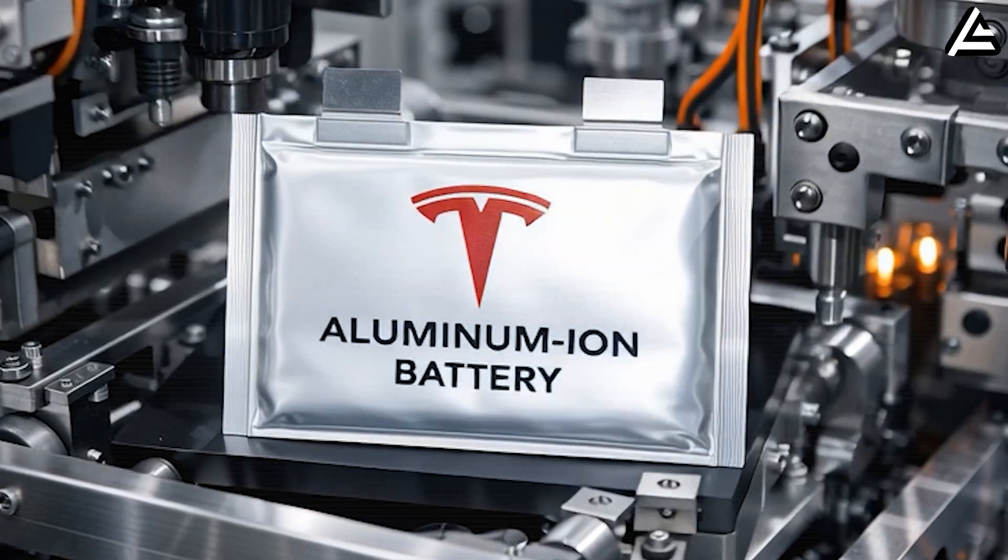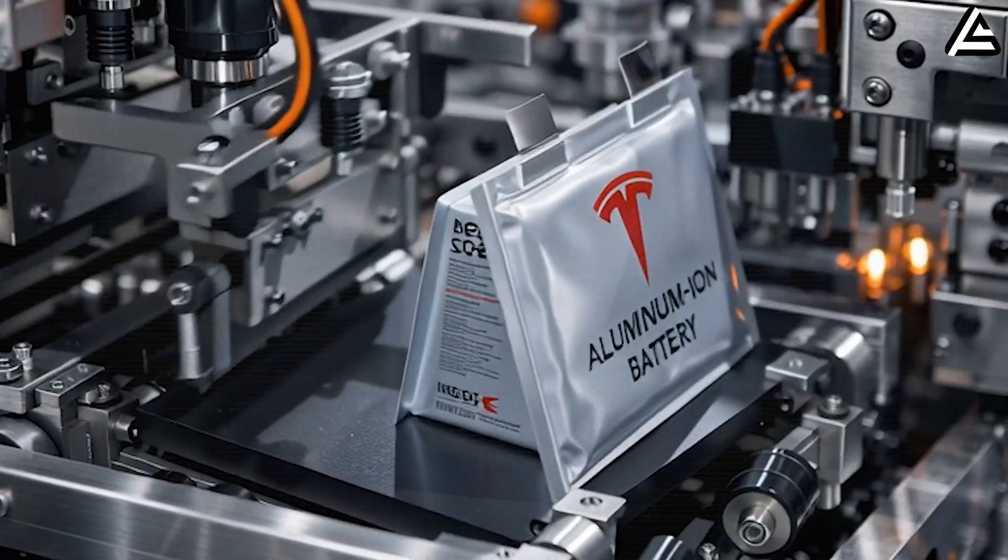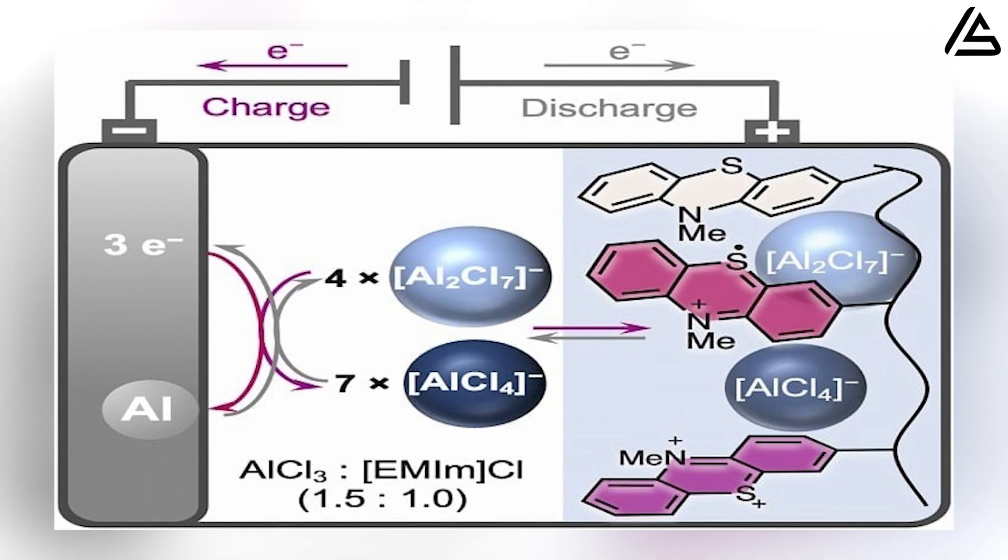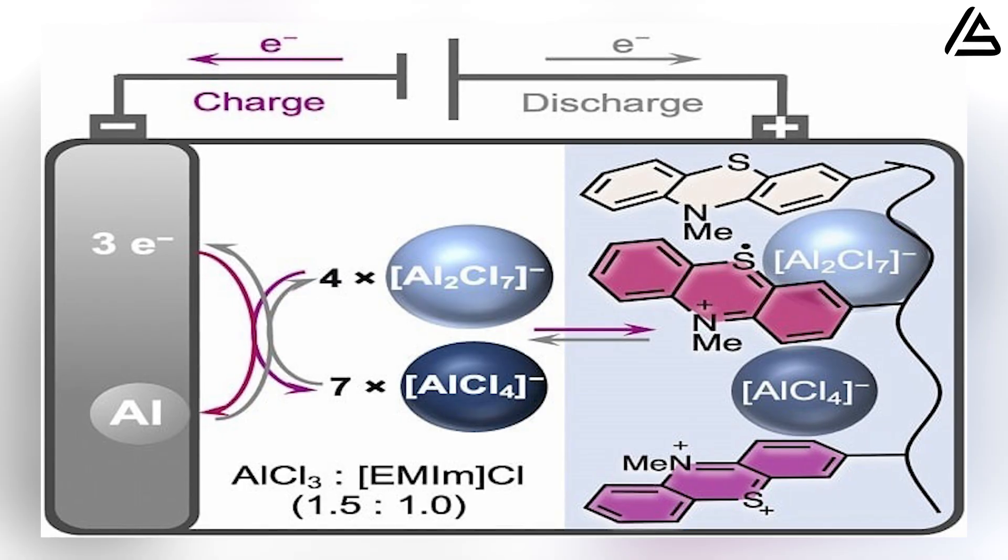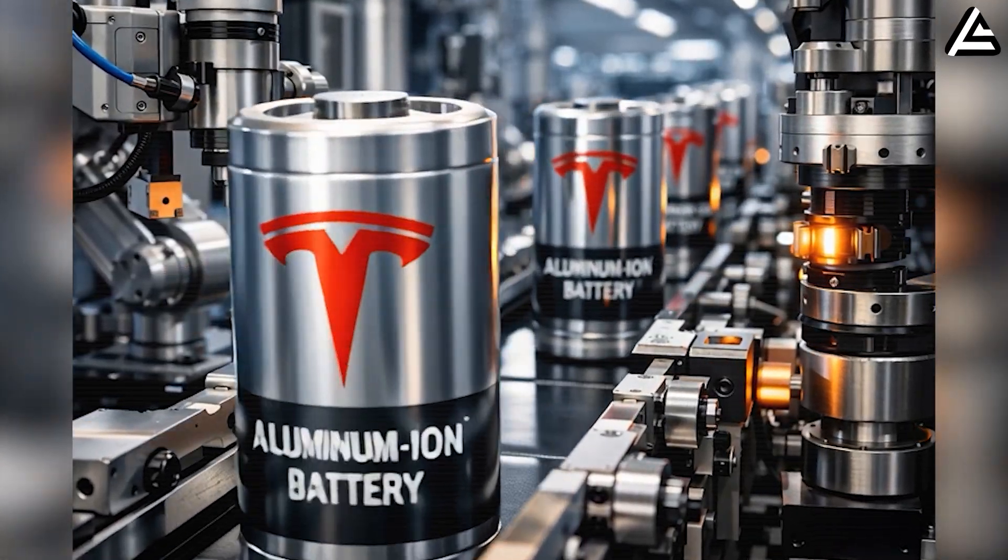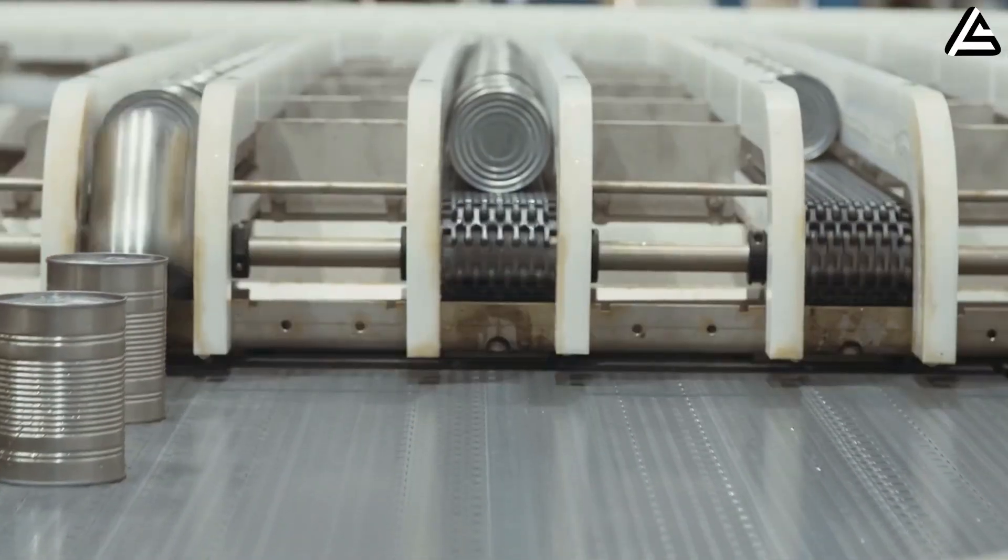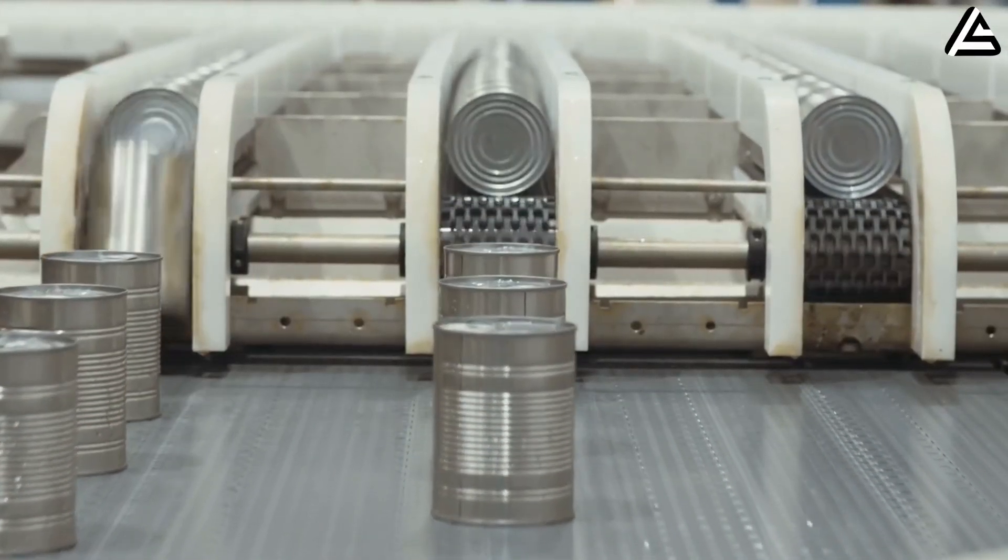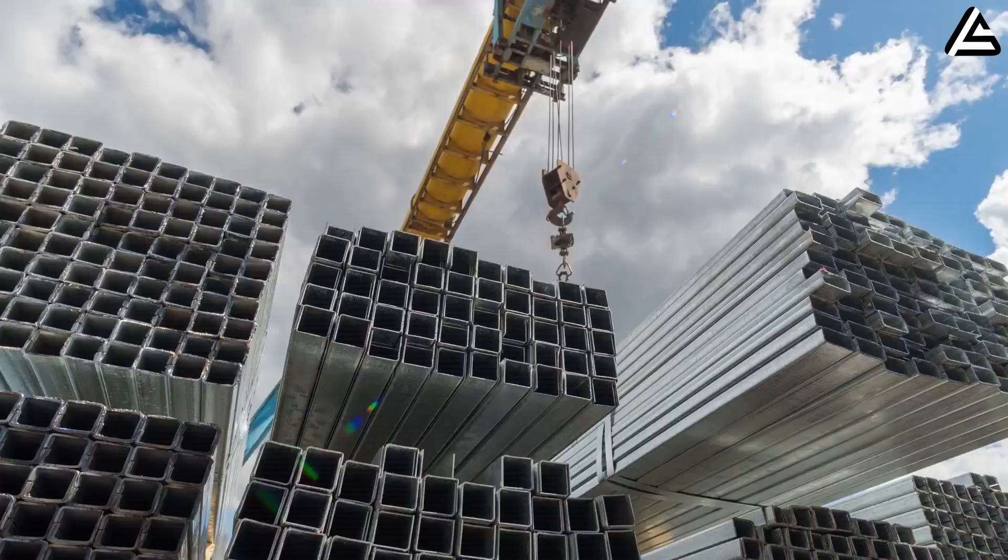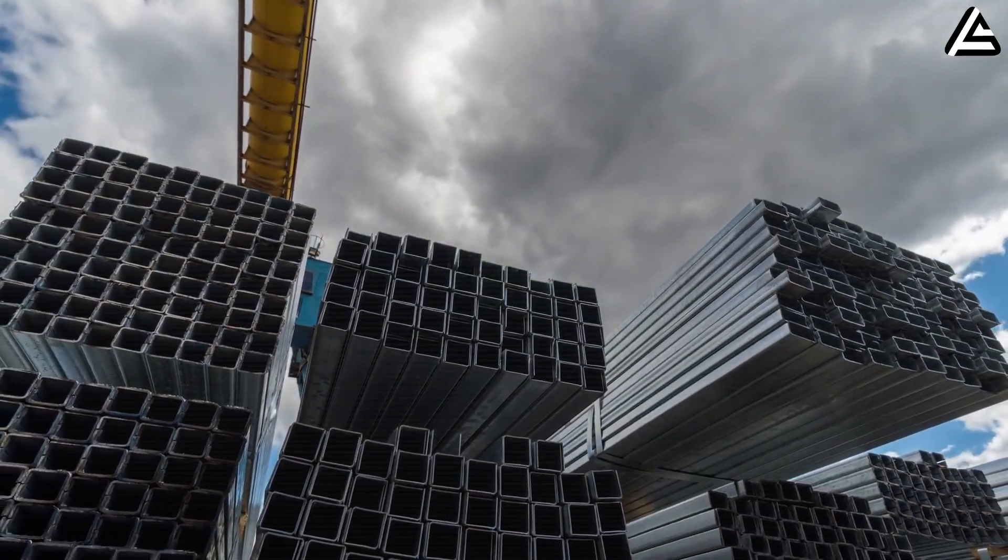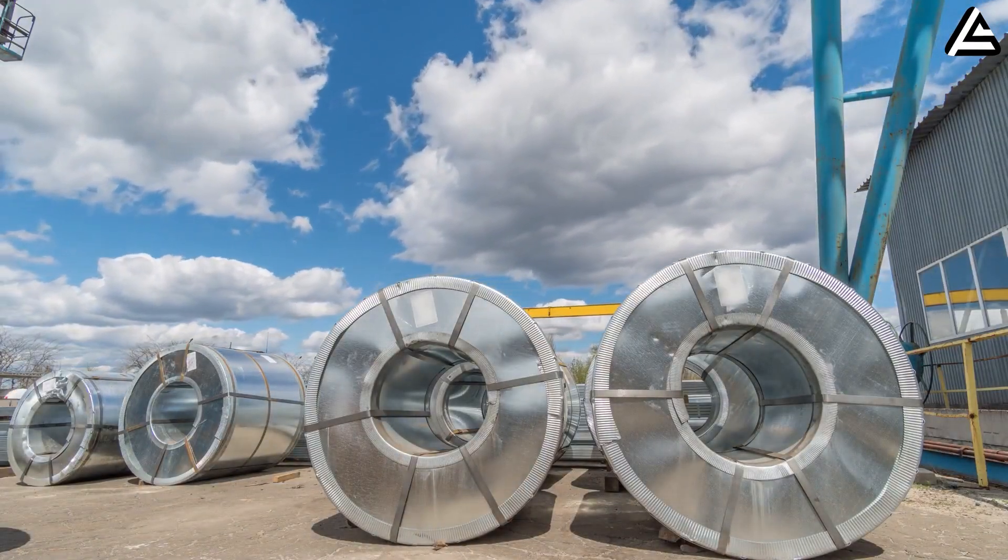Now compare that to aluminum. Aluminum-ion batteries use Al-3-plus ions, which carry three times the charge of lithium or sodium ions. In theory, this allows very high volumetric energy density. Aluminum metal is also extremely cheap, typically around $2,000 to $2,500 per metric ton, and globally abundant.